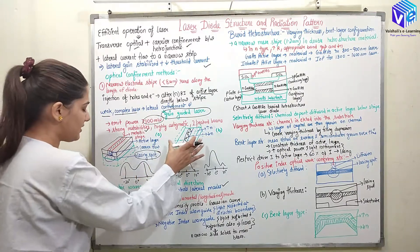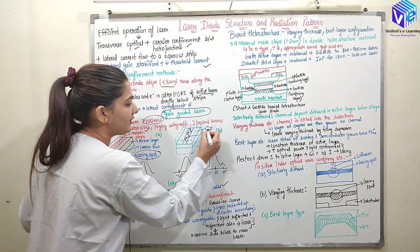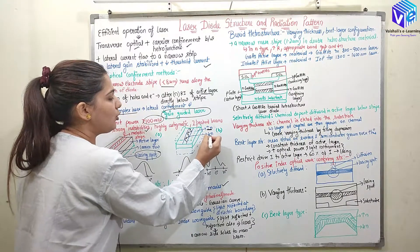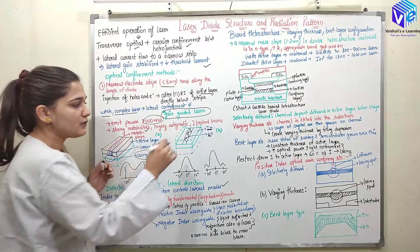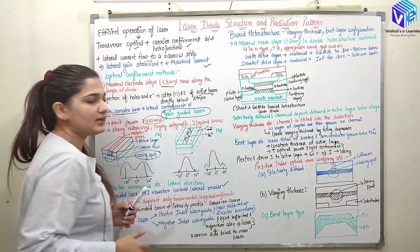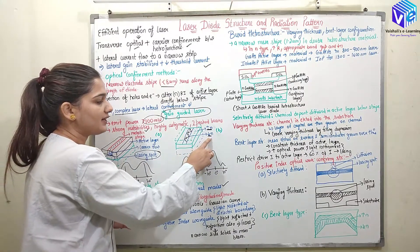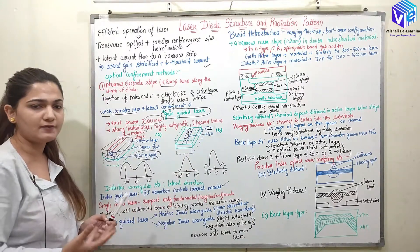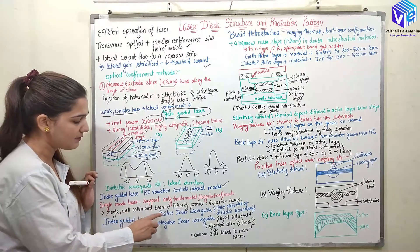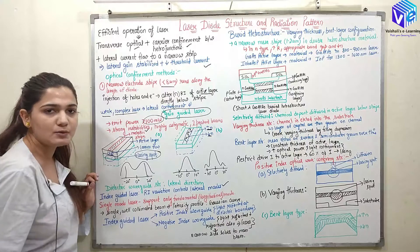This is my index-guided laser. At this portion I will be having the higher refractive index in the central region and lower refractive index in the outer region — or the reverse: lower refractive index in the central region and higher in the outer region. Both possibilities would be there, and due to which the index-guided laser will be having a positive index waveguide or a negative index waveguide.